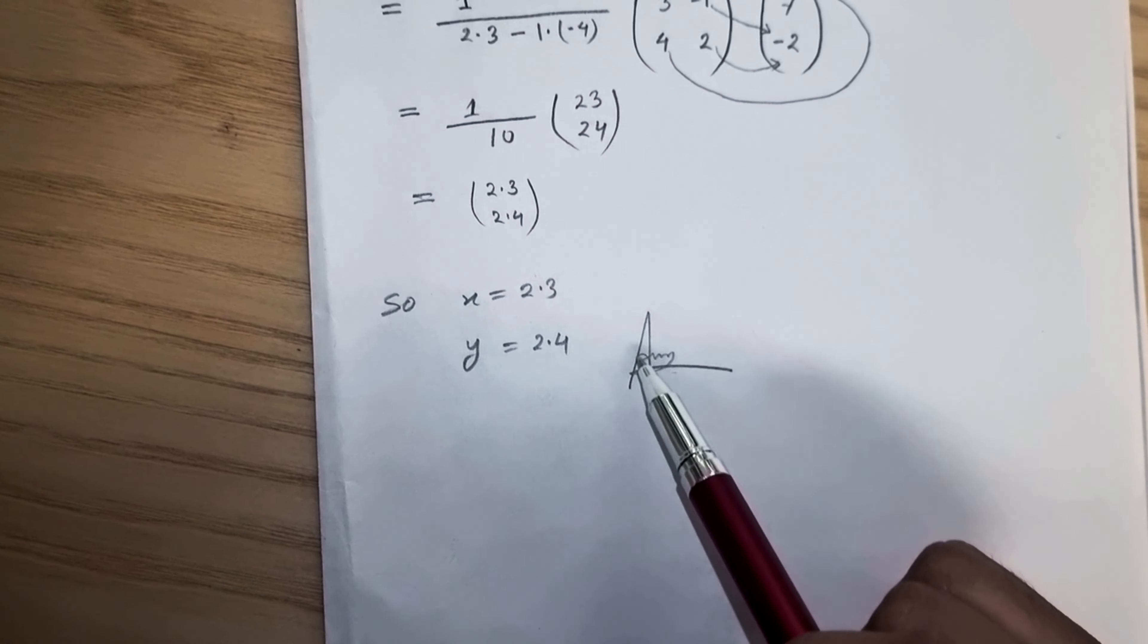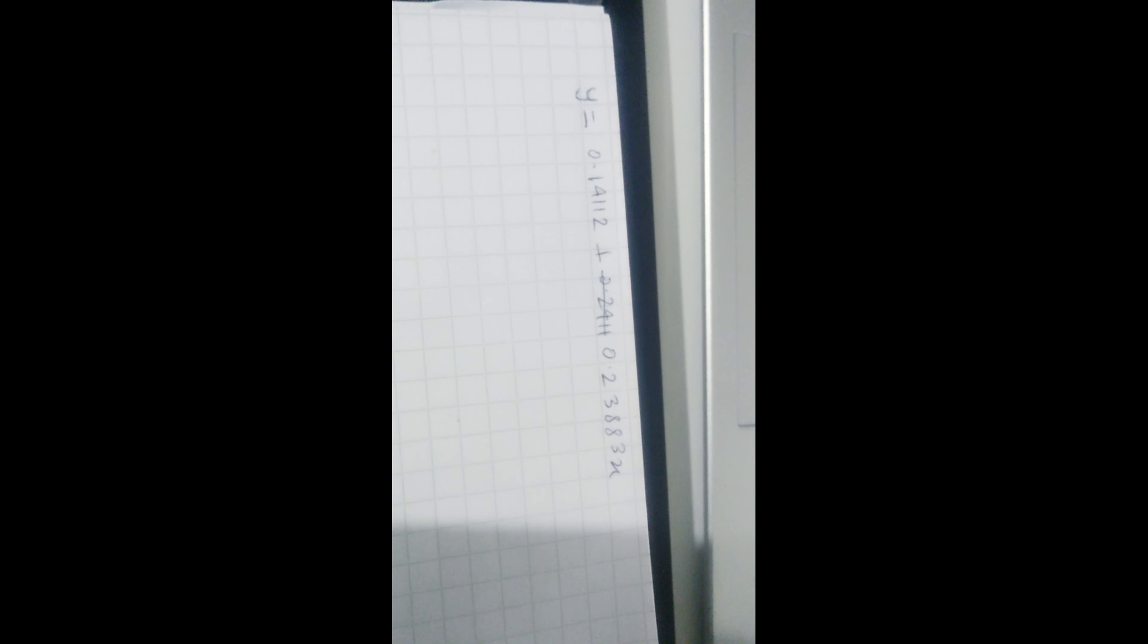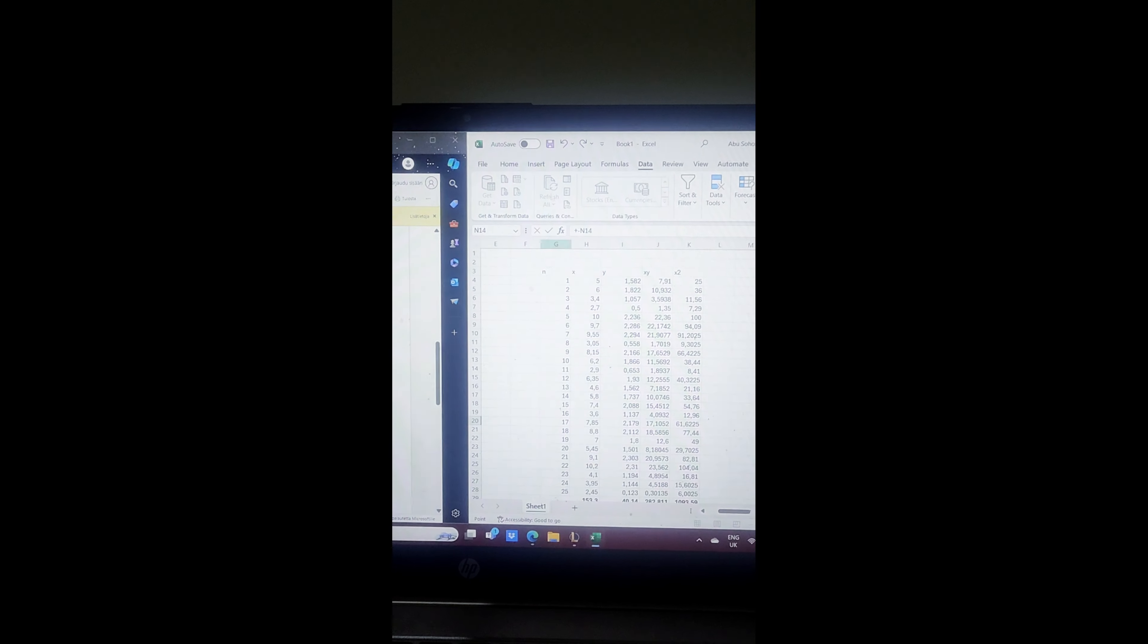For number six, question number six, I put these values into Excel and unfortunately got a different answer. I got this 0.23888, 0.23883 x and this as the constant which I wrote down. I hope you can see clearly. And this answer does not match with the answer given by the teacher. I don't know why it might be because some of the values here are wrong, but I double checked and I couldn't find anything wrong.